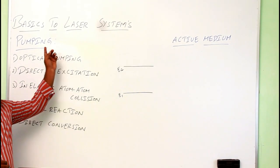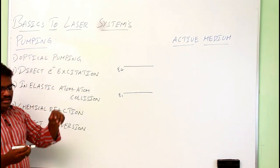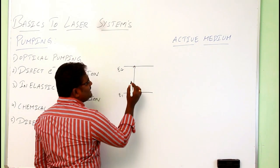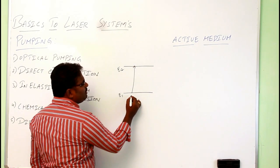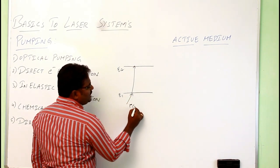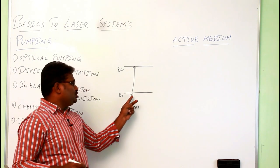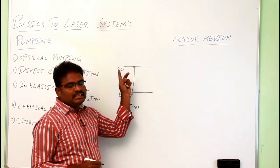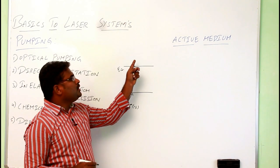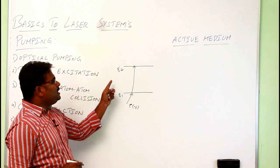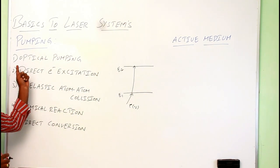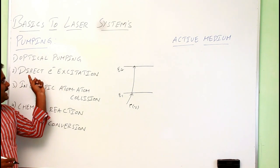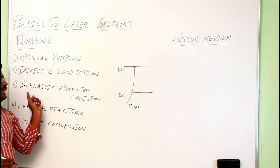Pumping means sending the atoms from ground state to excited state, or raising the atoms by supplying some amount of energy. The ground state atoms will go to the excited state — this process is known as pumping. Pumping is of different types: the first one is optical pumping, direct excitation, direct electron excitation, inelastic atom-to-atom collision, chemical reaction, and direct conversion.